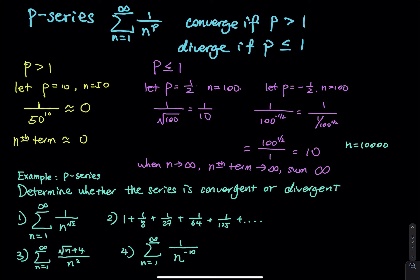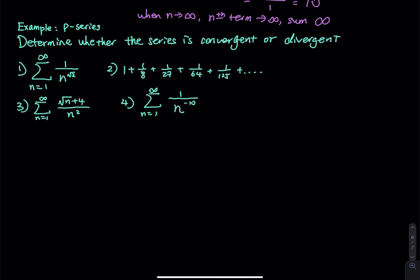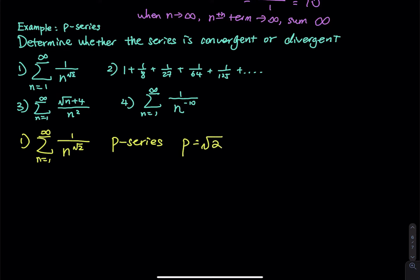So that is how I interpret the p-series, and I have four examples for you. Example 1: we have a series from n equals 1 to infinity of 1 divided by n raised to the square root of 2. This is a p-series where the power equals √2. Since √2 is greater than 1 — just a little bit greater than 1 — the entire series is convergent.